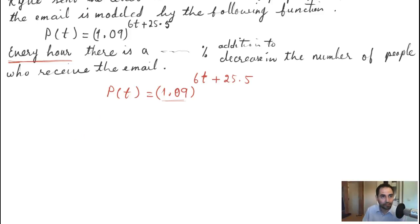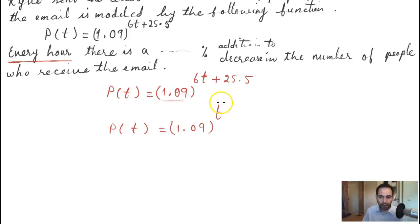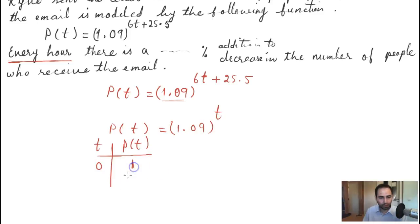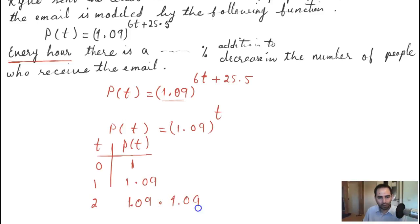What I mean is: if this function were simply p(t) = 1.09^t, then I would know exactly what happens each hour. In that case, when t = 0, the output is 1; when t = 1, it's 1.09; when t = 2, it's 1.09 squared; and so on — each hour multiplies the output by exactly one factor of 1.09.